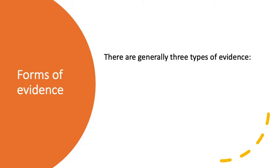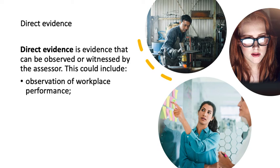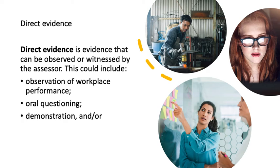There are generally three types of evidence: direct, indirect, or supplementary evidence. Direct evidence is evidence that can be observed or witnessed by the assessor. This could include observation of workplace performance, oral questioning, demonstration, and/or challenge test.